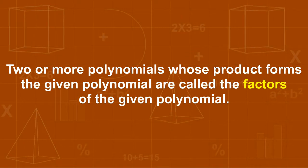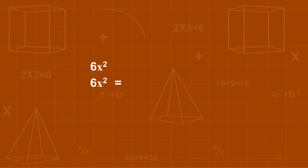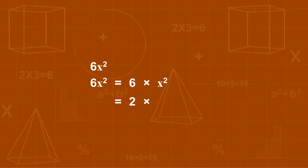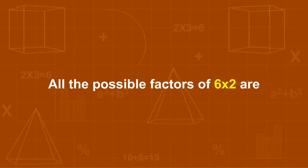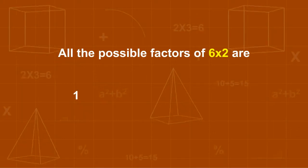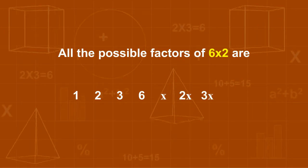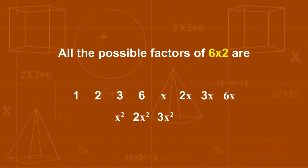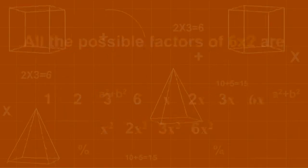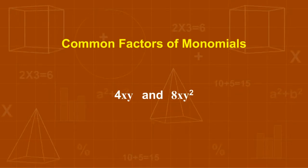For example, let's find the factors of 6x². 6x² is equal to 6 × x², which is equal to 2 × 3 × x × x. Thus, all the possible factors of 6x² are: 1, 2, 3, 6, x, 2x, 3x, 6x, x², 2x², 3x², and 6x².